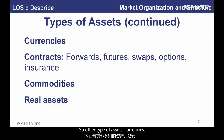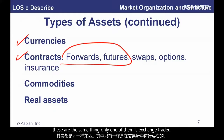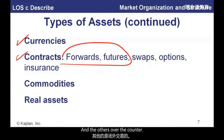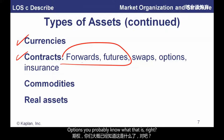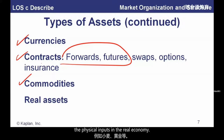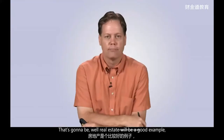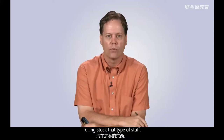Other types of assets: currencies — dollars, yen, euros. Contracts — this is what we'll cover in the derivatives material: forwards and futures are essentially the same thing, only futures are exchange-traded and forwards are over the counter. Swaps are contracts to exchange a series of payments through time. Options are the right but not the obligation to buy or sell something in the future. Insurance is a contract too. Commodities are the physical inputs of the real economy — wheat, gold. Real assets include real estate, machines, railroad rolling stock, and that type of thing.